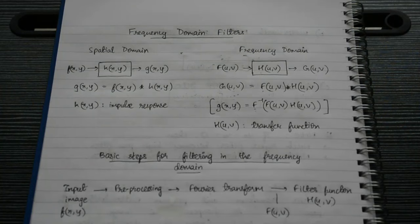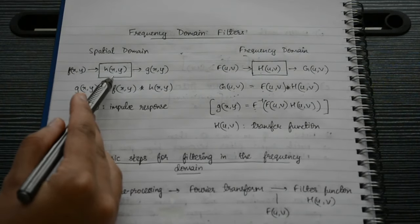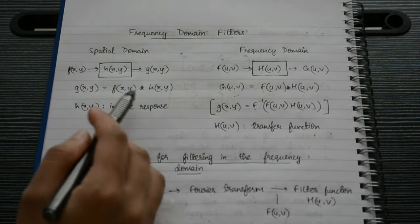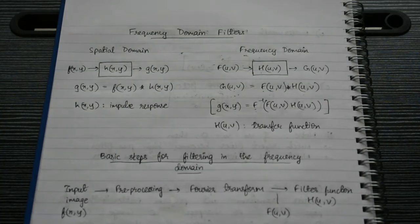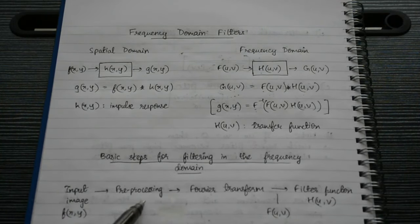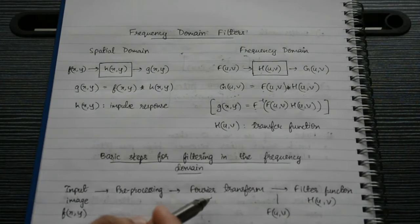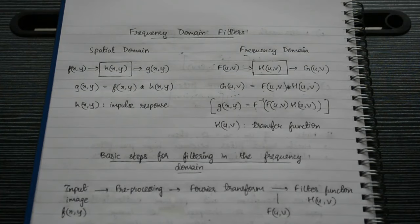Welcome to the 21st lecture of the DIP series. Today we're going to look at frequency domain filters. When we studied spatial domain filters, the process was relatively simple: we had an input image, we would apply the mask on it, and then we would get the enhanced image, which was the convolution of the input image and the filter or mask.